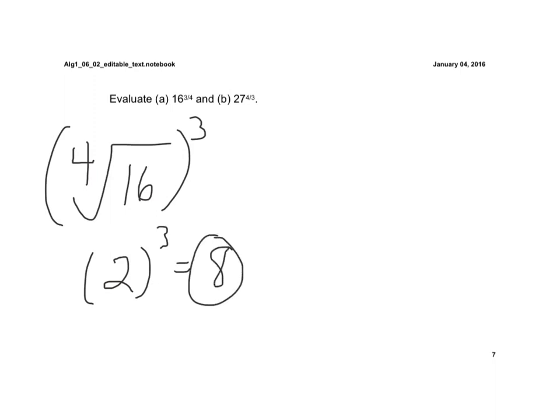So again, here, we use that core concept now. So my denominator is 4, so that's the fourth root of 16. And then that's raised to the third power. Well, the fourth root of 16 is 2, because 2 times 2 times 2 times 2 is 16. And then I raise that to the third power, and 2 to the third power is 8.